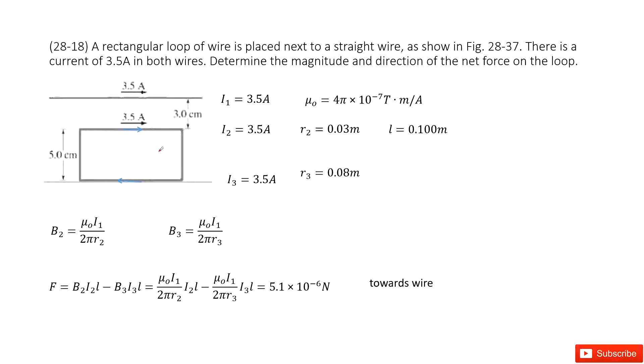You can see we have a loop of wire placed next to a straight wire. There is a current of 3.5A in both wires. We need to determine the magnitude and direction of the net force on the loop.